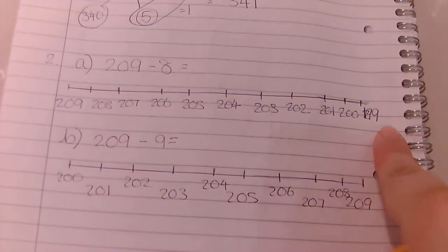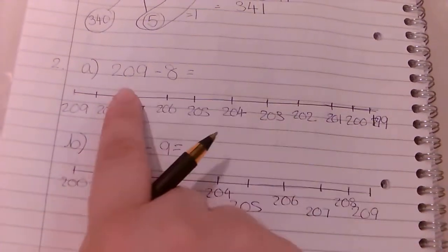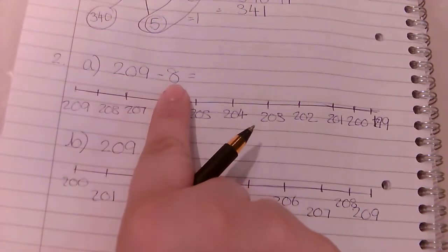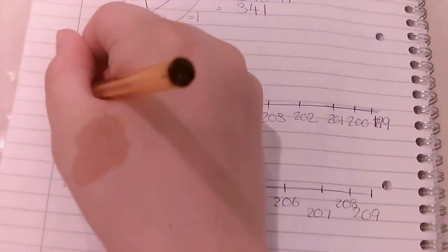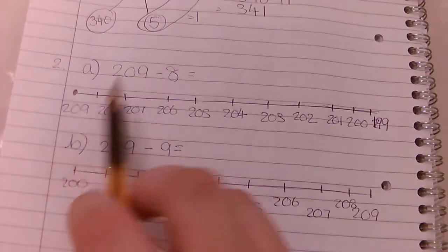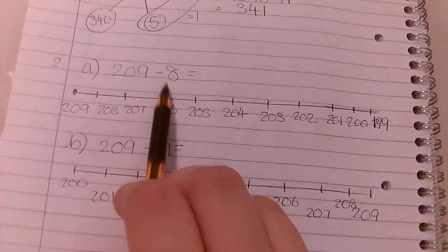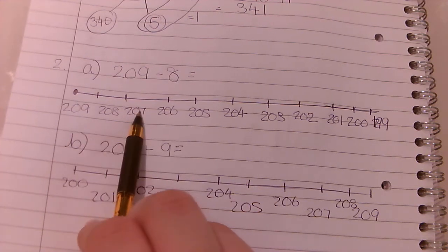So on the left is the biggest number, we're working down to the smallest number. So if we're going to be taken away, we're going to start with 209 and we're going to take away 8. So we're going to start here and we're going to be taking away 8, subtracting 8, so it's going to get smaller.